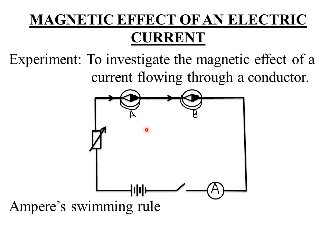The apparatus required are: one direct current power source, connecting wires, a switch, a rheostat or variable resistor, two magnetic compasses — compass A and compass B — and an ammeter for recording the amount of current flowing through the circuit.